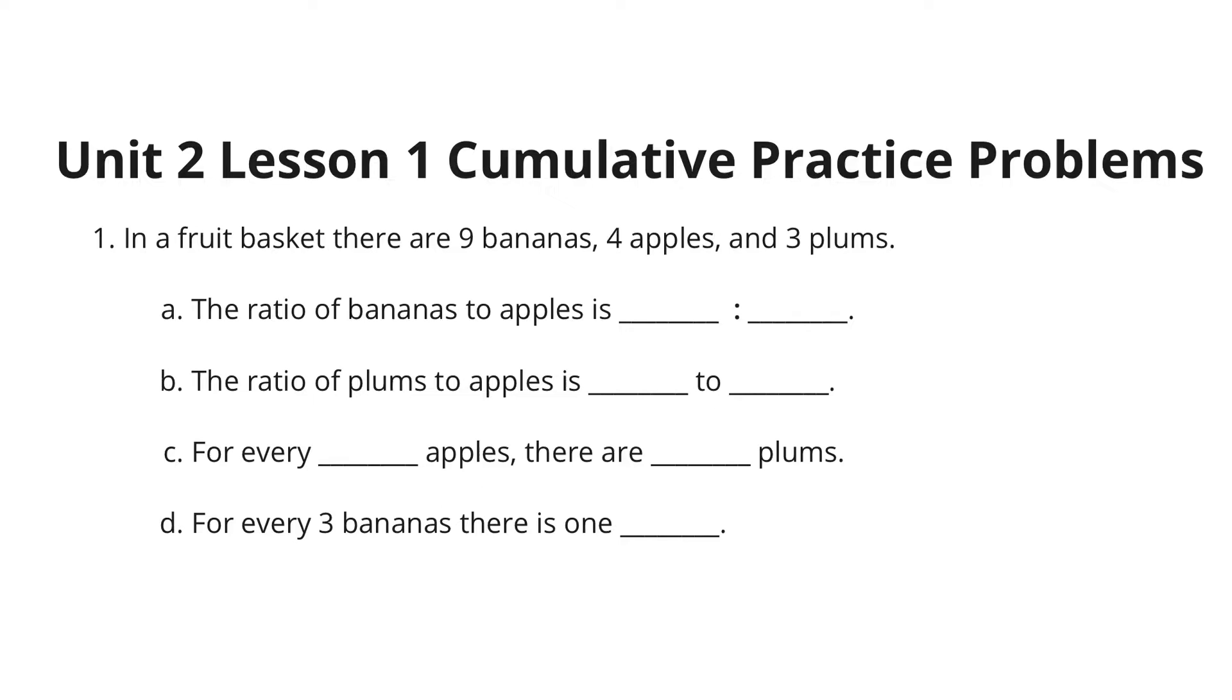In our first question, in a fruit basket there are 9 bananas, 4 apples, and 3 plums. The ratio of bananas to apples is, well, we have 9 bananas and 4 apples, so we can put 9 colon 4. The ratio of plums to apples, well, I see 3 plums and 4 apples.